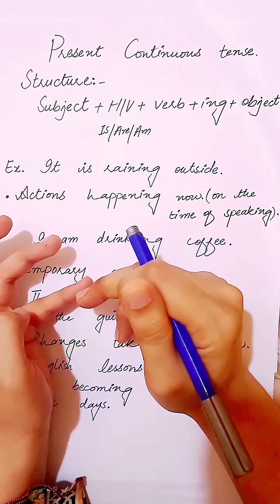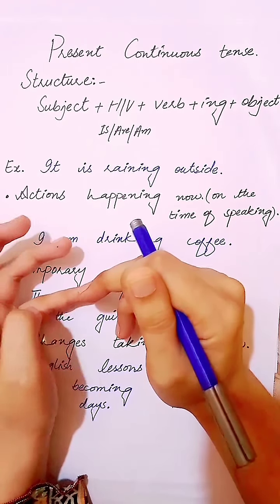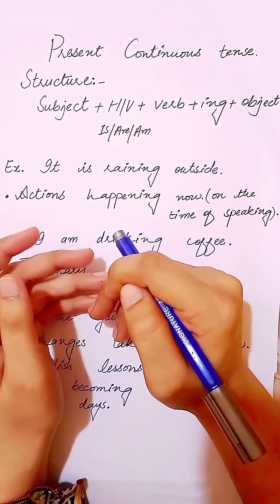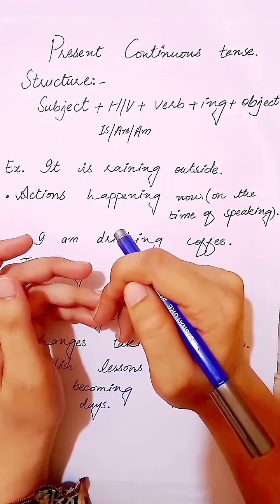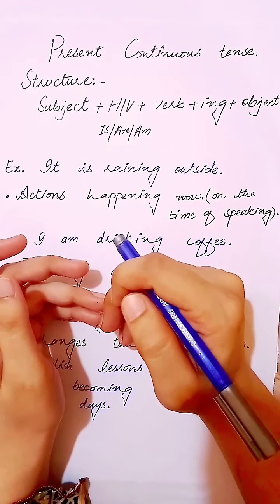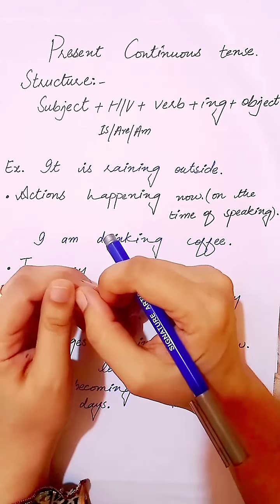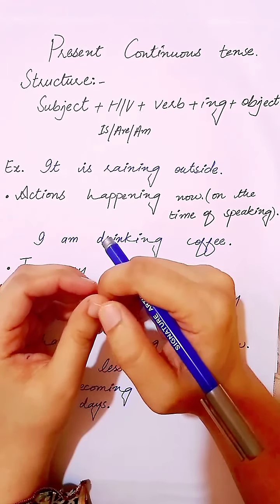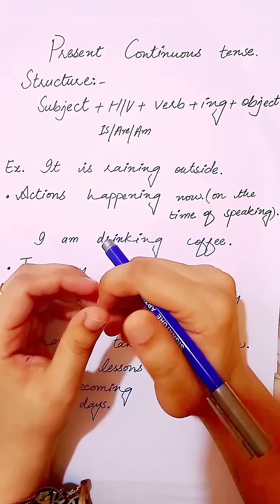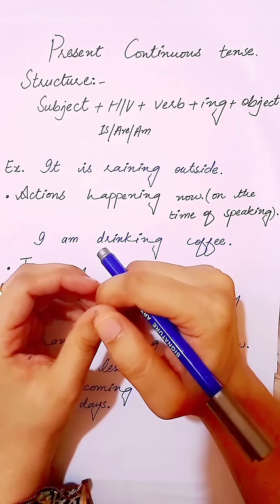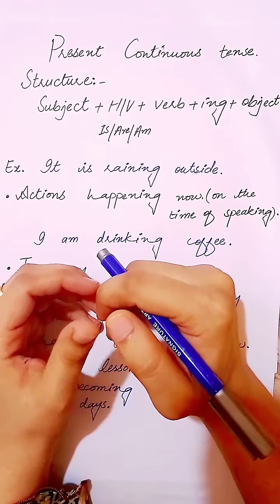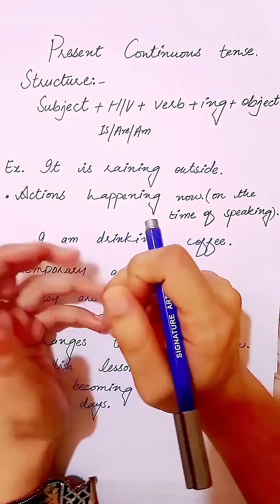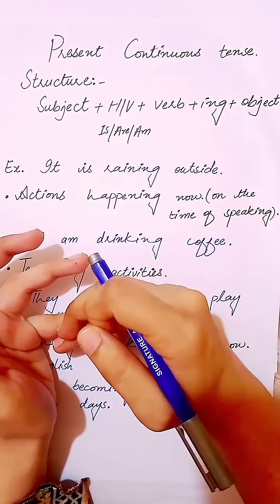We use the first form with '-ing' in present continuous tense. For negative sentences: subject, helping verb, 'not', verb, then object. For interrogative sentences: we write 'is', 'are', or 'am' according to the subject, then the subject, then verb plus '-ing', then object, and a question mark. These are the structures for simple, negative, and interrogative sentences in present continuous tense.